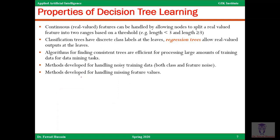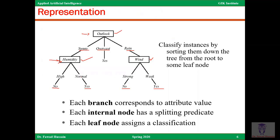The properties of a decision tree — we can have continuous real values. The tree shown here is fairly easy because when I say what's the outlook today, it can be sunny, overcast, or rain — three possibilities, so I made three branches. But what if the attribute was age, ranging from 0 to 100? Am I going to make 100 branches for each possible value? That will be too much, and some values may not even have data associated with them.